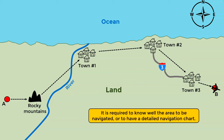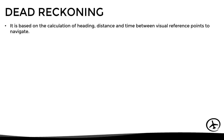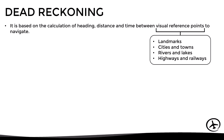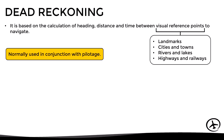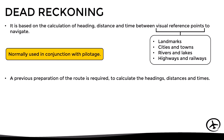So as we can see, in order to apply this method of navigation it is necessary to be familiar with the area, or to have a detailed navigation chart in order to properly identify the visual references to be used. However, this is a very rudimentary method of navigation, so to complement it, another method known as dead reckoning is normally used. Dead reckoning navigation is based on the calculation of heading, distance, and time between visual reference points, and it is used in conjunction with pilotage in VFR flights.